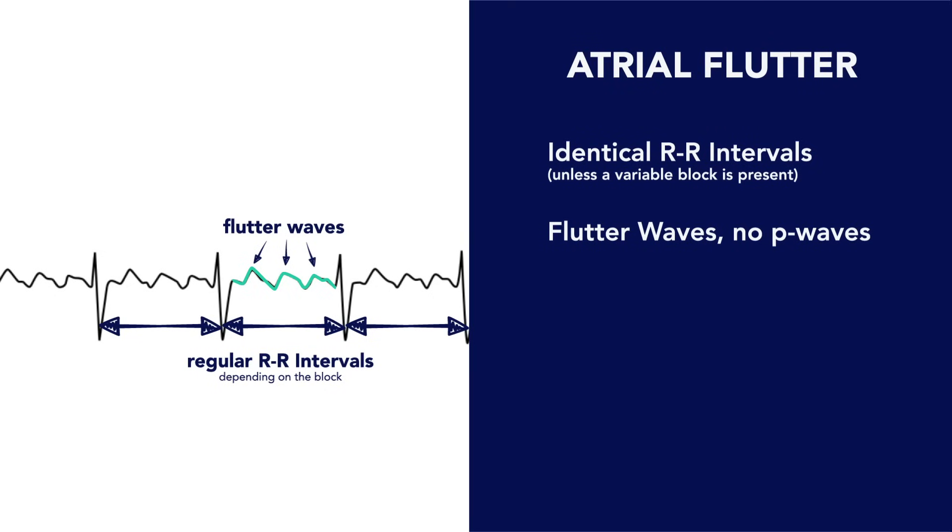These produce the sawtooth pattern between QRS complexes, representing the re-entry atrial depolarization. And finally, you'll also have narrow QRS complexes.